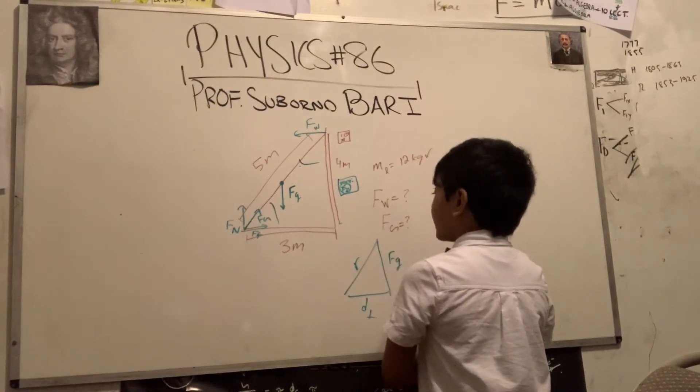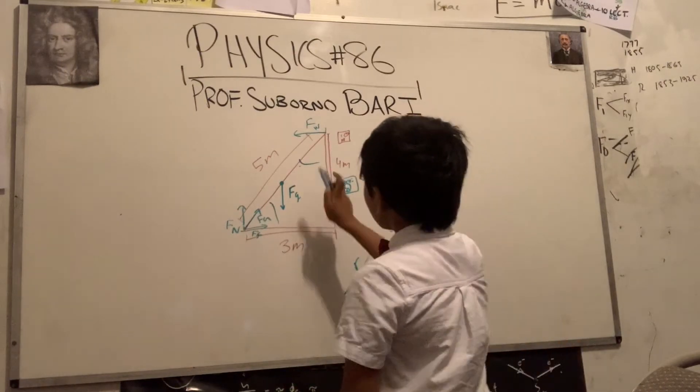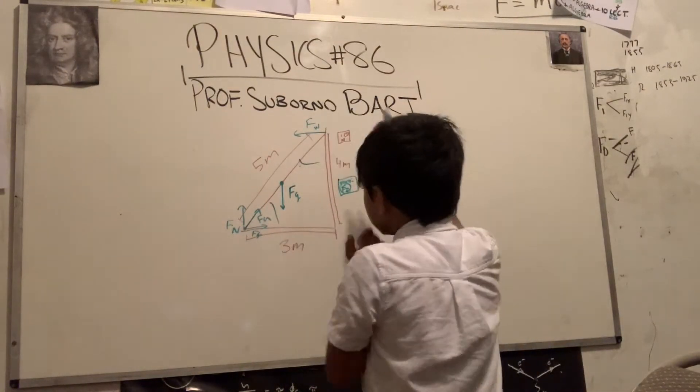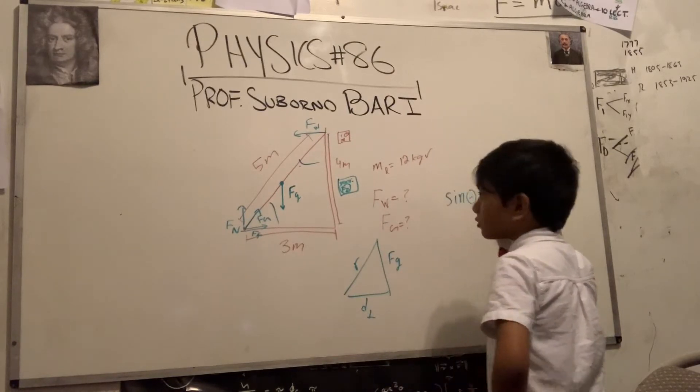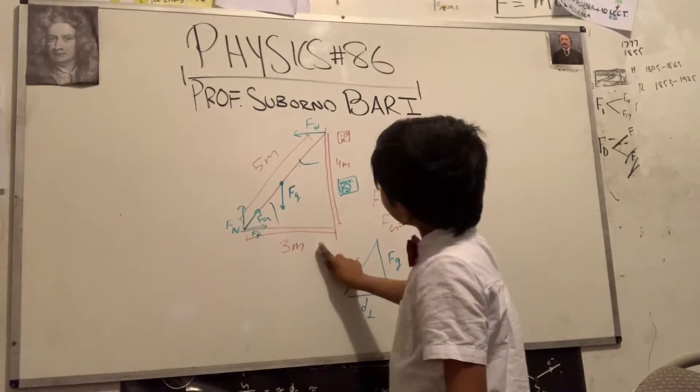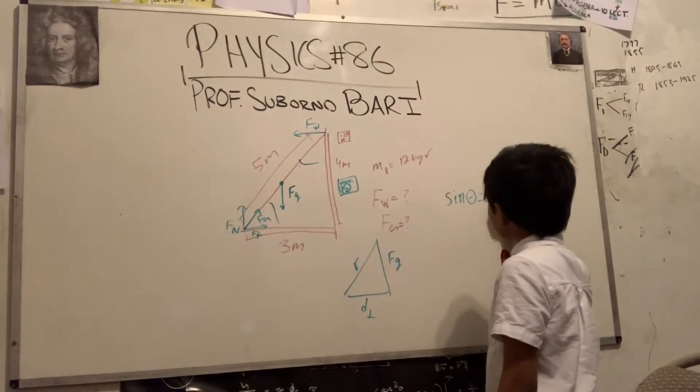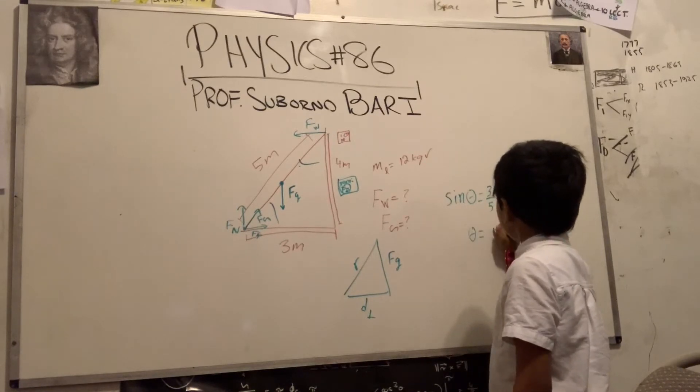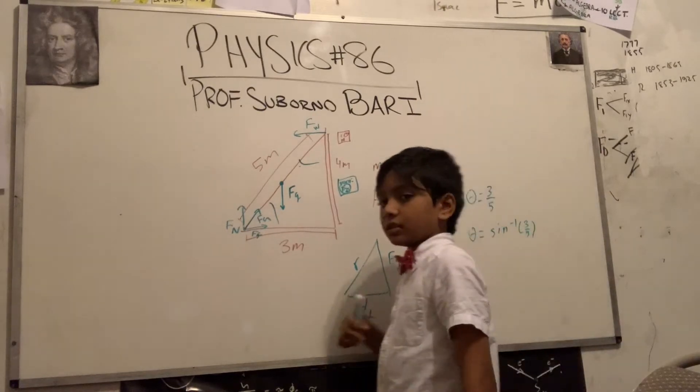That means we're going to be using sine. That means opposite to hypotenuse. So sin theta equals 3 over 5. That means theta is actually equal to the sin inverse of 3 fifths.